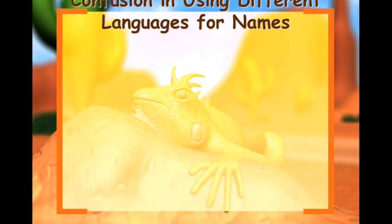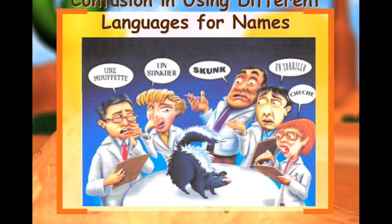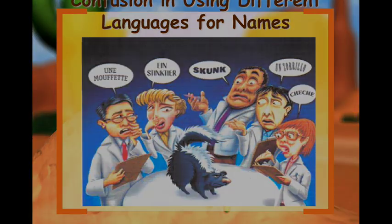The confusion of using different languages for names is illustrated here: we have a picture of a skunk and different scientists are calling it by its common name in different languages. If you don't speak another language in the science world, you're not going to understand what they're talking about. So we use the same language, which is Latin or Greek.